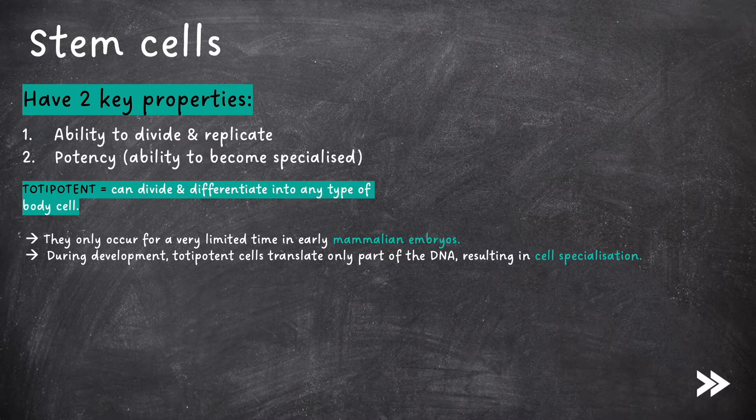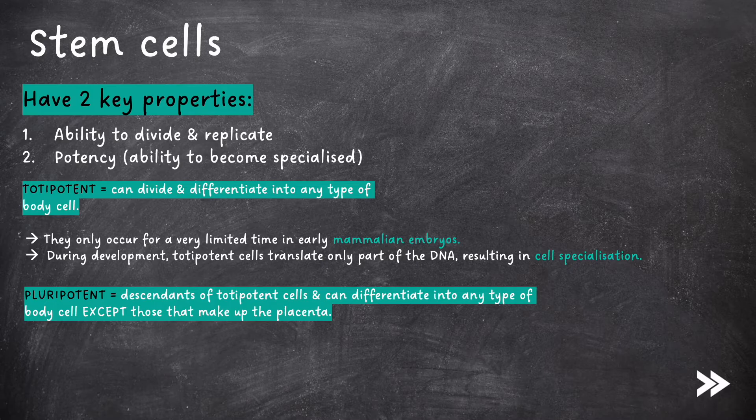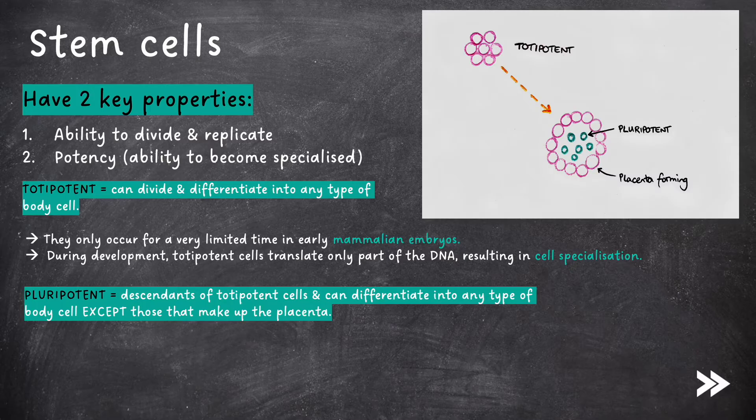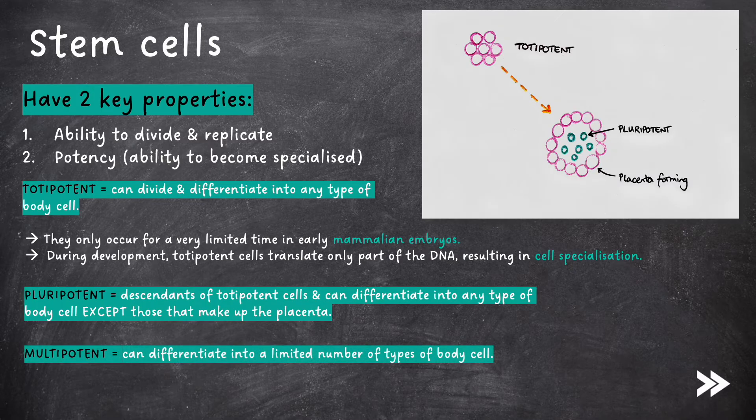Pluripotent cells are descendants of totipotent cells and can differentiate into any type of body cell, except those that make up the placenta. Multipotent cells can differentiate into a limited number of types of body cell.